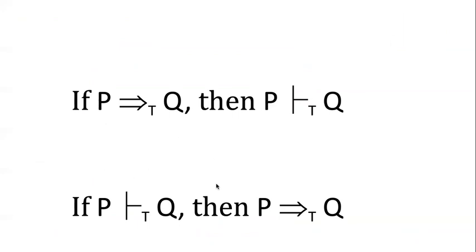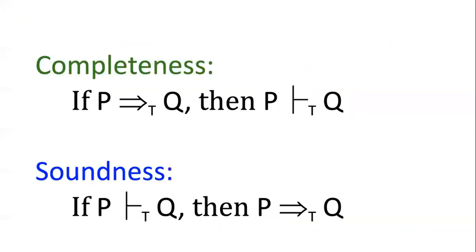Or conversely, we can look in the other direction. What if there's a formal proof from p to q, like in bool or prop? Then p really does logically entail q. These two conditionals are the two key metalogical theorems. These describe properties of the formal systems we've created so far.